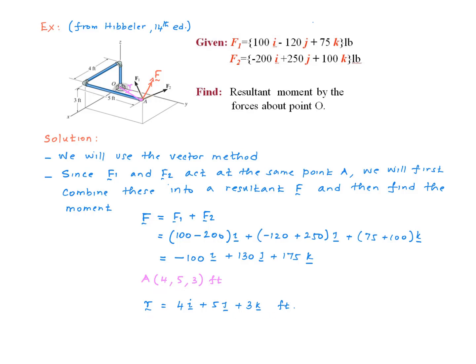The coordinates of point A are 4 feet in the X direction, 5 feet in the Y direction, and 3 feet in the Z direction. All three are positive quantities. Therefore, the R vector is simply 4i + 5j + 3k.